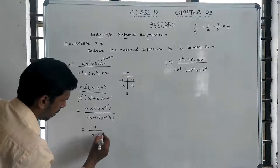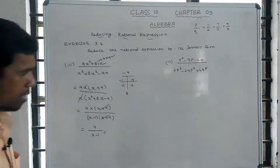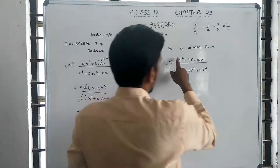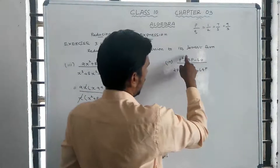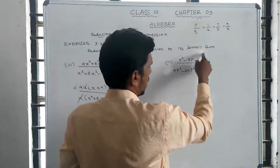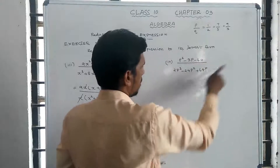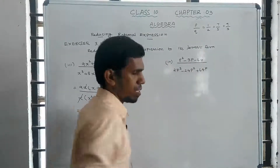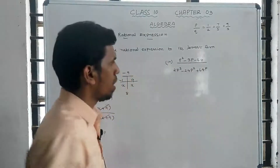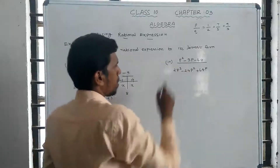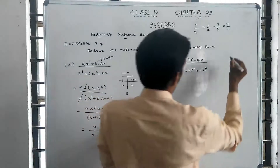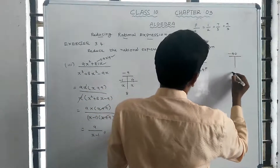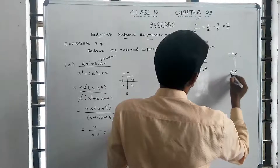Solution 4: p squared minus 3p minus 40 divided by 2p cubed minus 24p squared plus 64p. The numerator has a product of minus 40 and a sum of minus 3.